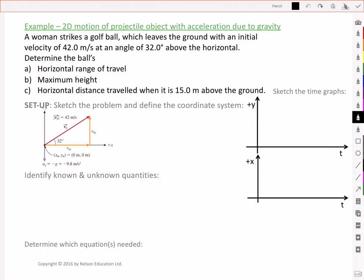So here's our sketch. We've got an initial velocity of 42 meters per second and we can resolve that into our x and our y components. We've defined our positive x-axis to our right and positive y-axis is up. We're starting at a position of 0,0 and we've got an acceleration that's downwards at negative 9.8 meters per second squared.